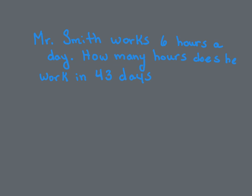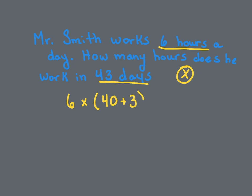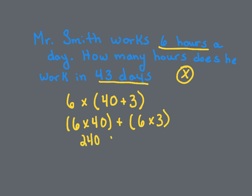Mr. Smith works 6 hours a day. How many hours does he work in 43 days? So 6 hours a day for 43 days — we know we're going to use multiplication. Let's use the distributive property: distribute that 6 to that 40 and that 3. So: 6 times (40 plus 3). Distributing: 6 times 40 plus 6 times 3. 6 times 4 is 24, add on your 0 — that's 240. Plus 6 times 3 is 18. These are our two partial products — adding them up we get our main product of 258 hours.